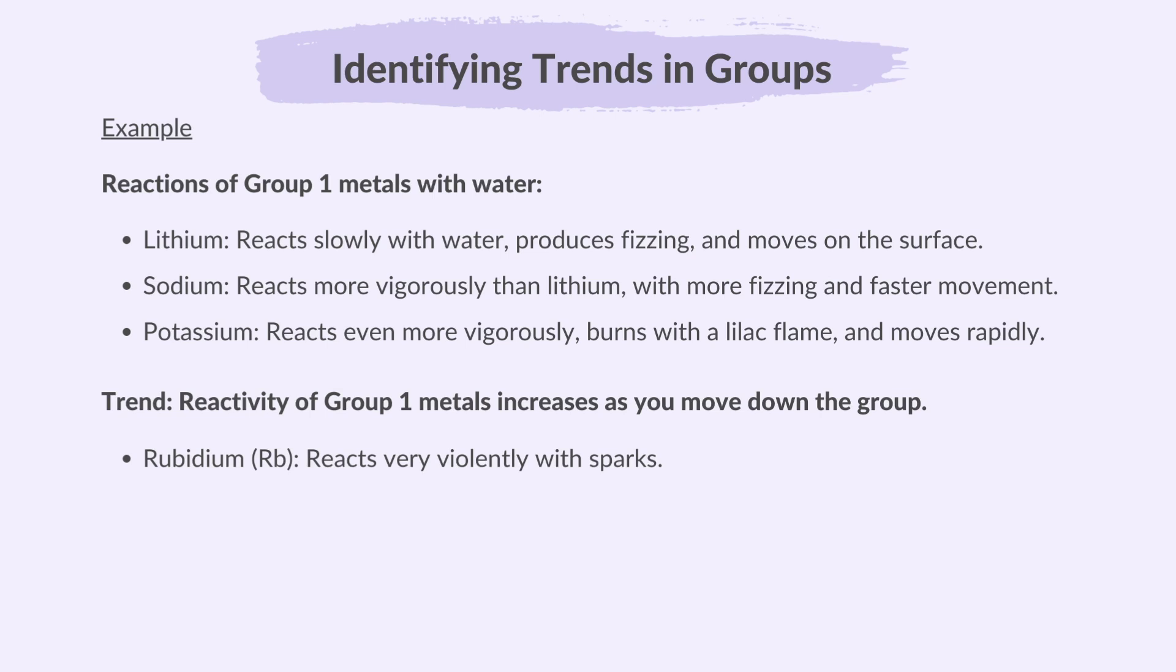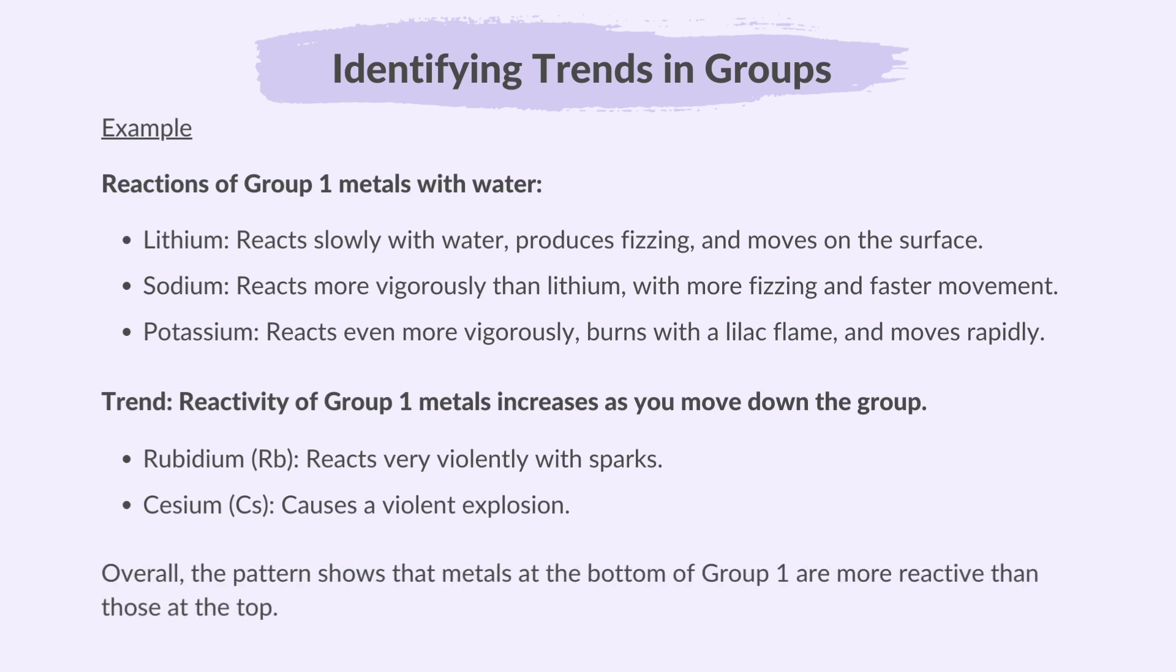And cesium causes a violent explosion. Overall, the pattern shows that metals at the bottom of group 1 are more reactive than those at the top.